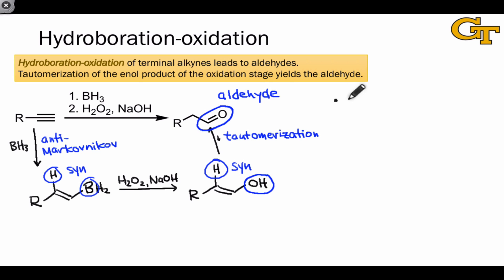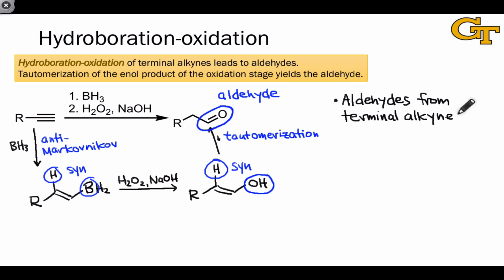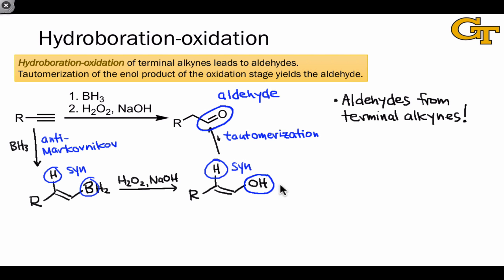Hydroboration of alkynes is really synthetically useful because it's the only way for us to synthesize aldehydes selectively from terminal alkynes. Any other method that adds oxygen to the alkyne will either do so in an oxidative way, adding too many oxygens, or such that oxygen ends up at the more substituted position — this is acid-catalyzed hydration and oxymercuration. So this is very much a synthetically useful reaction. Notice that ultimately the fact that H and OH added syn doesn't matter to the outcome of the reaction, since tautomerization destroys the alkene and leaves us with a C=O double bond without stereochemical issues.